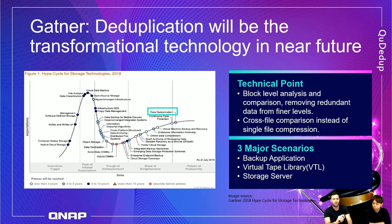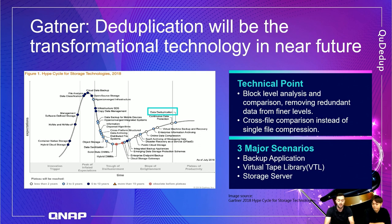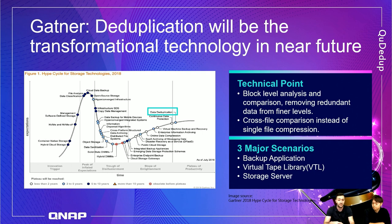Deduplication will be a transformational technology in the near future. QNAP is very disruptive and at the forefront of this technology. As we see in the Gartner chart, data deduplication is quite advanced - it's one of the four coming disruptive technologies and one of the most advanced we're going to have. From a technical point of view, we have block-level analysis removing duplicate data, and cross-file comparison instead of single-file compression.